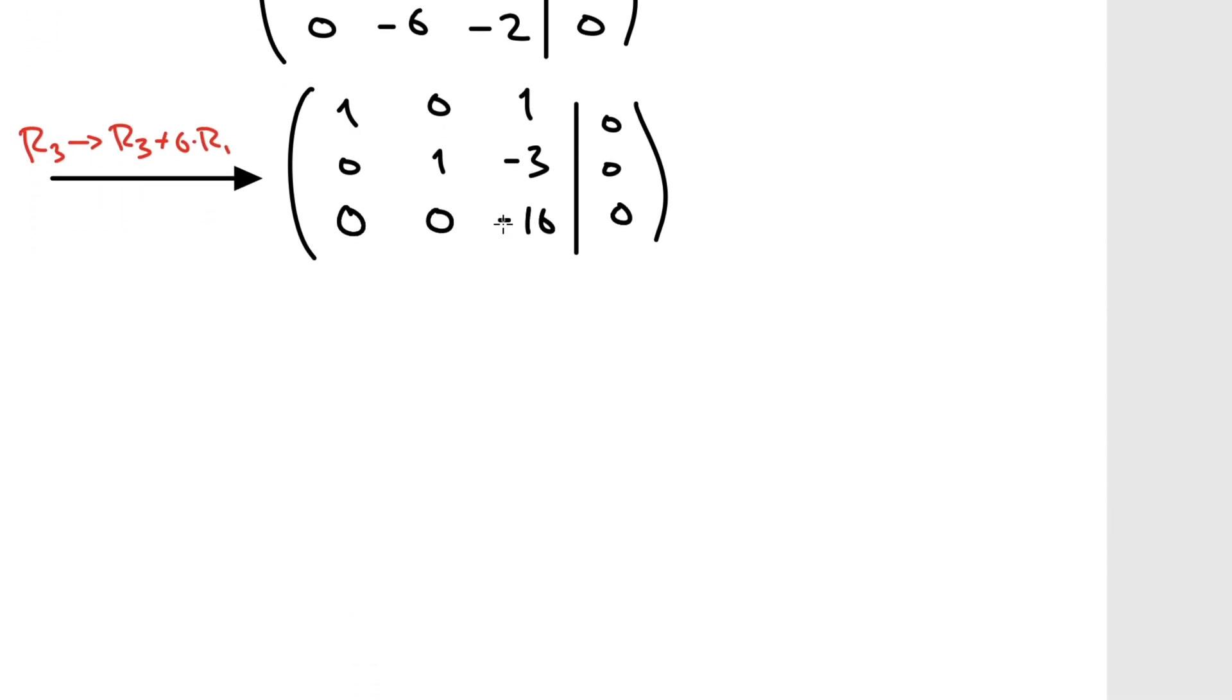So what have we changed? We've only changed the third row. And that means we're going to get zero, zero. And now we have to be careful. So this should be negative two plus six times negative three. If I'm not mistaken. We really need to focus here because it's easy to make a mistake. Again, negative two minus six times negative three. That's negative two plus 18. That's negative 16 and a zero.